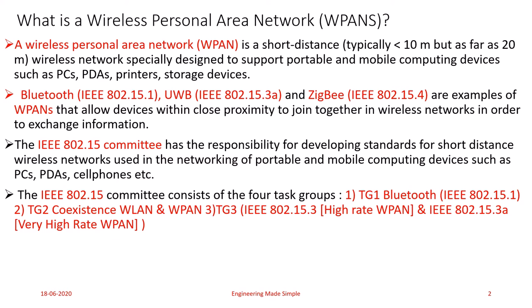Task Group 1 is for Bluetooth and defines physical and MAC specifications for wireless connectivity with fixed, portable, and moving devices within a Personal Operating Space (POS), which extends up to 10 meters in all directions. Task Group 2 focuses on coexistence of WPAN with WLAN, achieving interoperability that allows data transfer between a WPAN device and an IEEE 802.11 (WLAN) device.